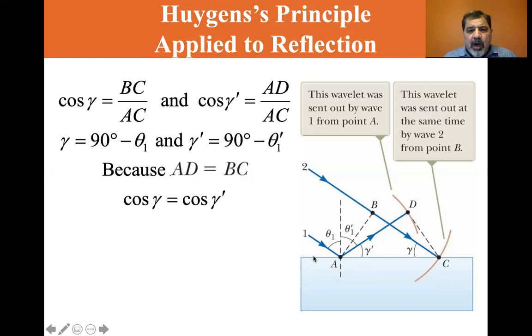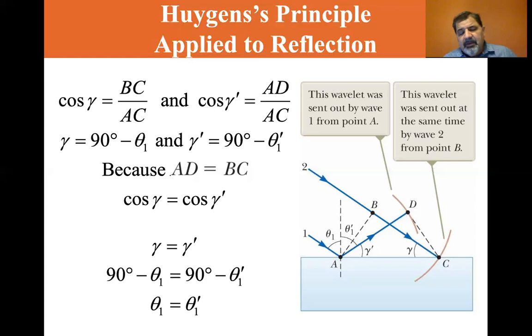Now because AD equals BC, cosine of gamma equals cosine of gamma prime. And that means that gamma equals gamma prime. Gamma is equal to 90 degrees minus theta one, and gamma prime is equal to 90 degrees minus theta one prime. So since gamma equals gamma prime, 90 degrees minus theta one equals 90 degrees minus theta one prime. And that gives you that theta one is equal to theta one prime, which is the law of reflection.